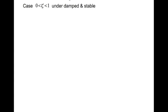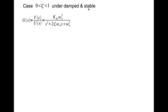The third case we are looking at is when zeta is between 0 and 1. This is the so-called underdamped case and it's still stable. When zeta is between 0 and 1, the transfer function ends up having complex poles — i.e., if you solve the characteristic equation, you get complex roots.